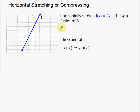We're going to horizontally stretch this function by a factor of 3 and see how that affects the function itself. The first thing we're going to do is find a couple of points on this line, then horizontally stretch them, and look at how that affects the equation. So the y-intercept is a good point. Here's a point at negative 1, negative 1, and another point at 1, 3.